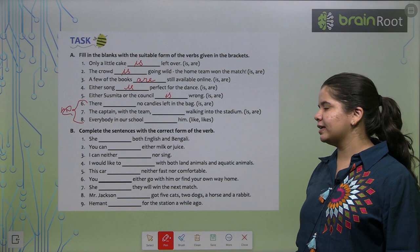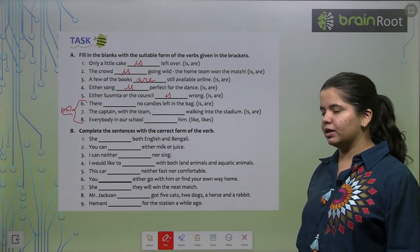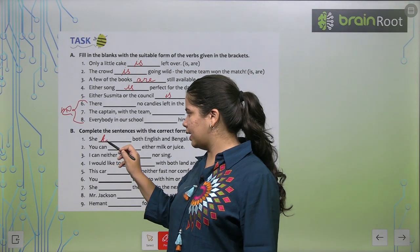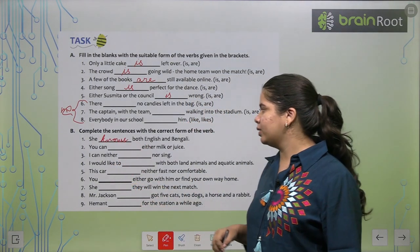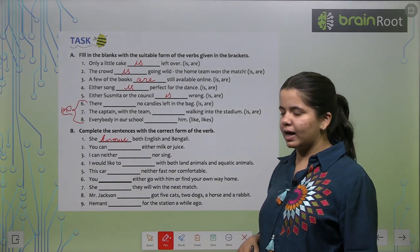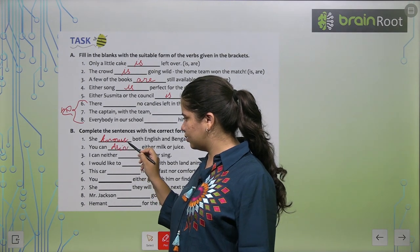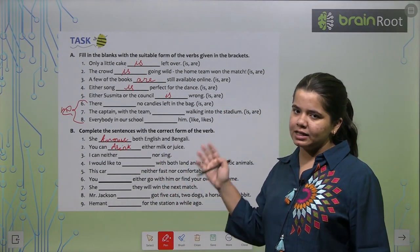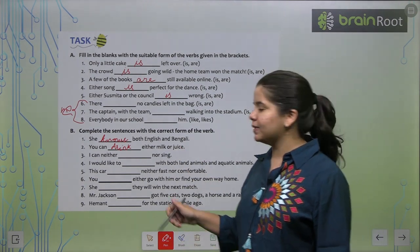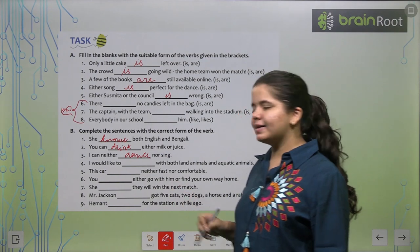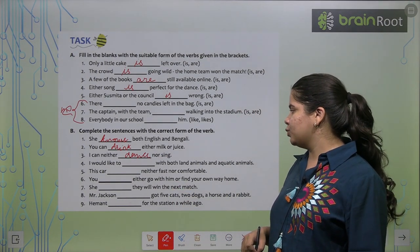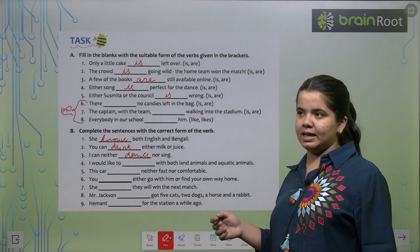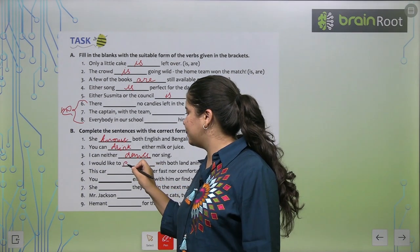Next, complete the sentences with the correct form of the verb. She knows both English and Bengali. K-N-O-W-S. You can drink either milk or juice. Next, I can neither sing nor. We can say sing is already written. So, hum kya bolenge. I can neither dance nor sing. I would like to explore with both land animals and aquatic animals. So, aap kuch bhi likh sakte hai. I am writing explore.